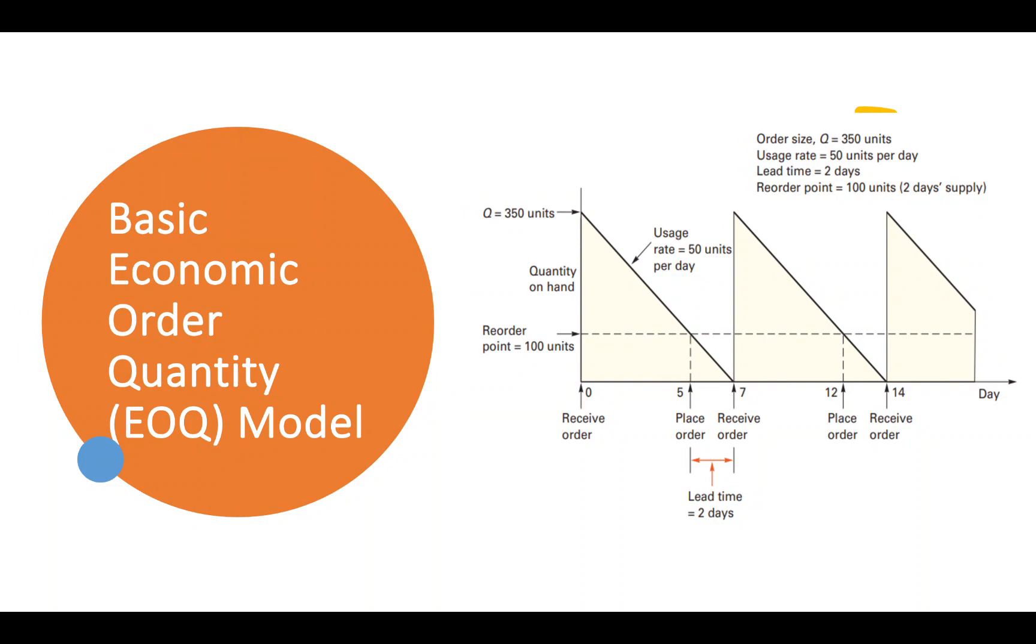In this Economic Order Quantity model, organizations implement this model to determine what optimum amount of inventory should be ordered from the vendors, keeping in mind that either of the costs should be minimized.